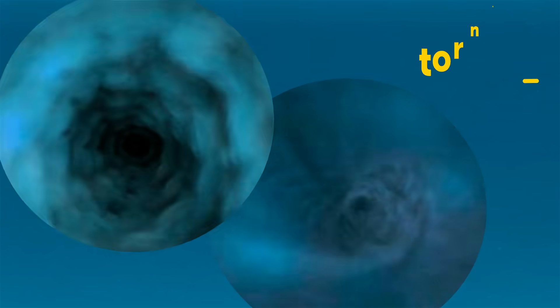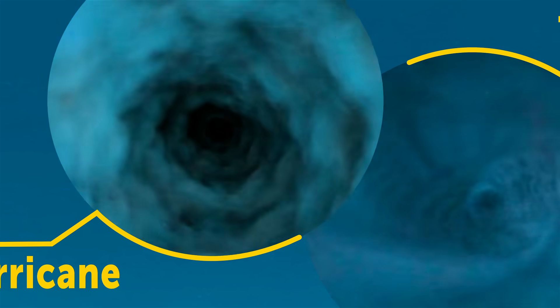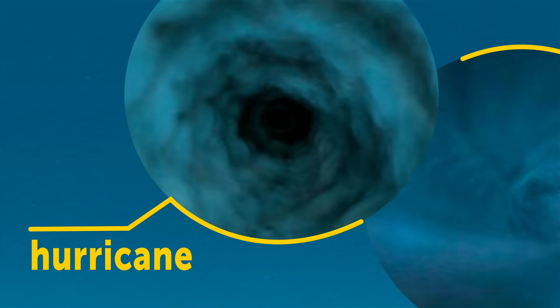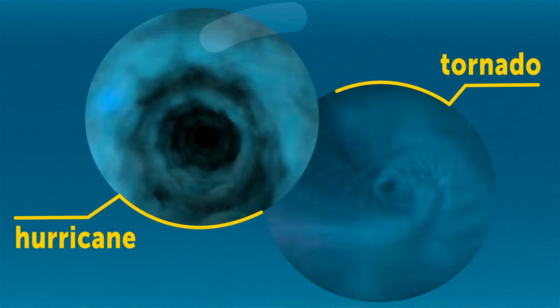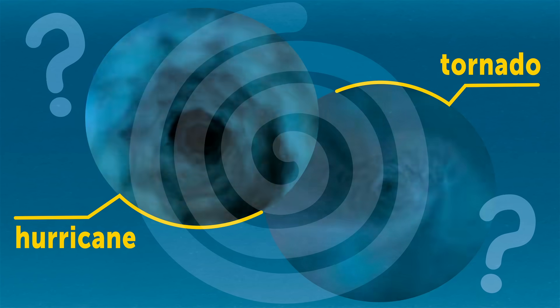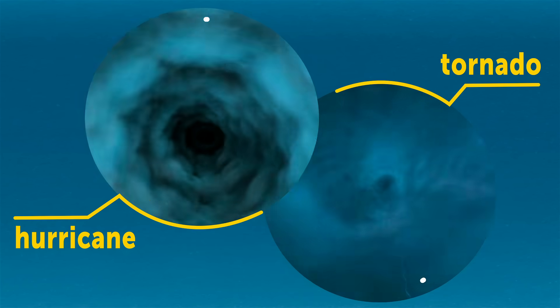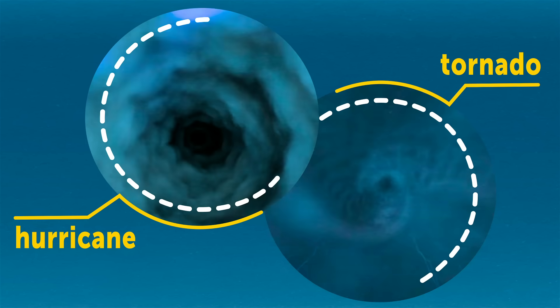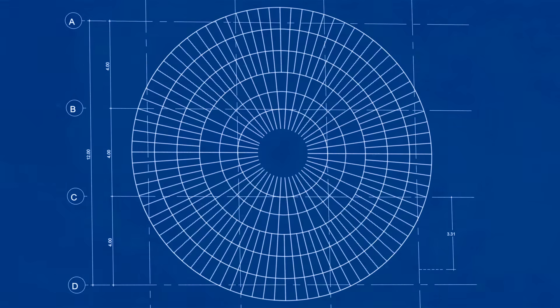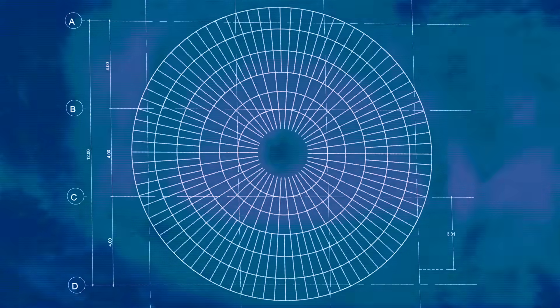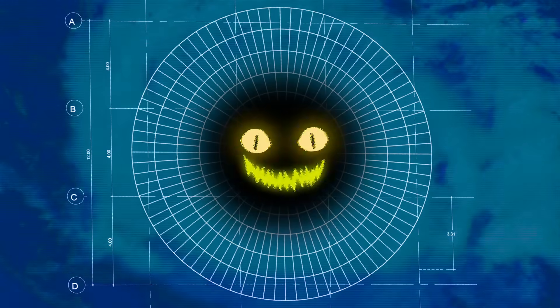Still, tornadoes and hurricanes are not entirely different after all. And they have certain similarities too. Remember the swirling part? That's the thing. Both hurricanes and tornadoes are powerful masses of air rotating around the center at high speeds. And the center, in its turn, is usually calm and windless. So calm, in fact, that it's almost creepy.